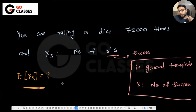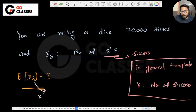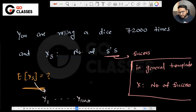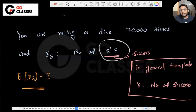What you can do is divide X3 into 72,000 trials. For each trial you can have one random variable, maybe Y. But since you know this is the typical format we already derived, don't drive the formula again. Directly use the formula: expectation equals N into P. The success is getting a three — that should be clear to everyone.